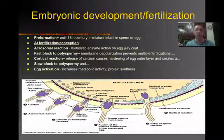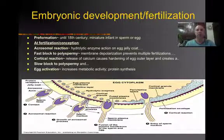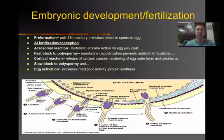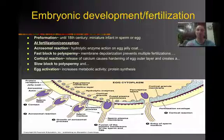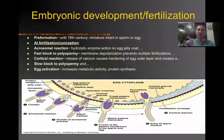We understand that the sperm has half the information genetically and the egg has the other half, and when they unite, they create a diploid organism. If we go through the entire process of fertilization, we start out with what's called the acrosomal reaction, which is basically when the sperm hits the egg. There's a hydrolytic enzyme in the sperm's tip that is very specific to each species, and it's able to eat through the jelly coat of the egg. It binds to a protein receptor on the egg.